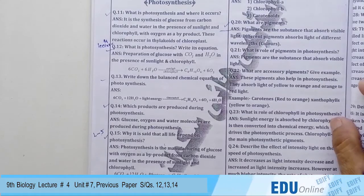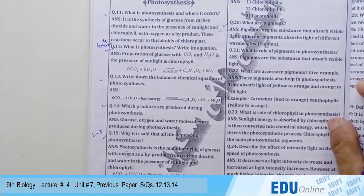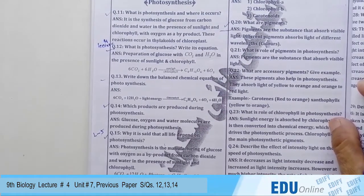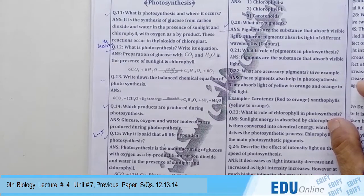Assalamu alaikum dear students. I am going to start lecture number four, question number 12 on page 58. The question is: what is photosynthesis? Answer: preparation of glucose from carbon dioxide and water in the presence of sunlight and chlorophyll.